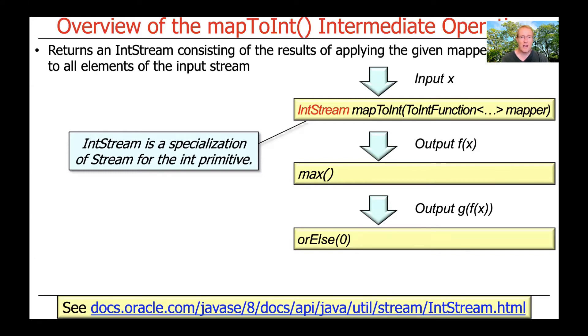Notice that IntStream, which is the type that's returned by mapToInt, is a specialization of a stream for the int primitive. So there are things like int, long with a lowercase l, double with a lowercase d. Those are all primitive operations. And there are various specializations of the stream operations that would do things like mapToInt, mapToLong, mapToDouble, and so on.